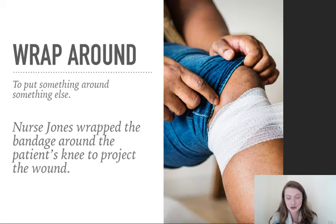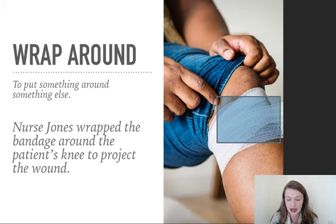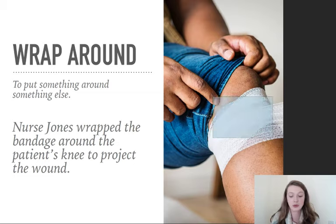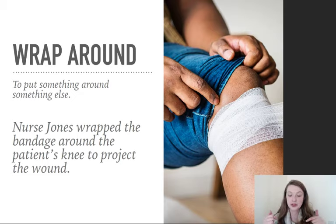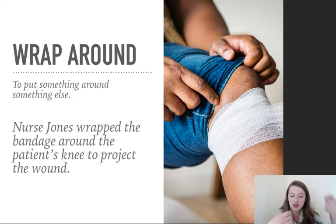To wrap around means to put something around something else. You can see here we have a bandage — you may also hear it called a dressing, not related to a dress. Nurse Jones wrapped the bandage around the patient's knee to protect the wound. She had a bandage and put it around the knee — the knee being this part of the body.